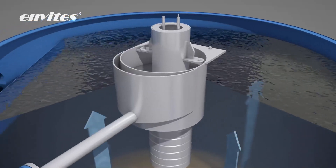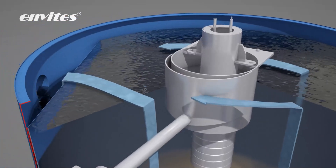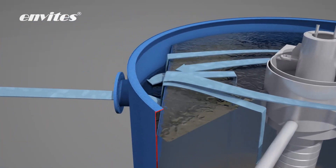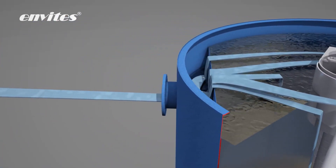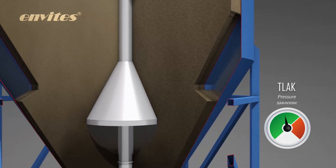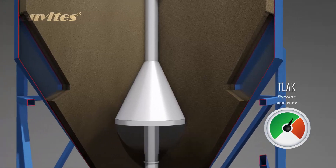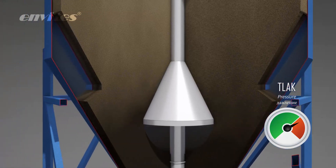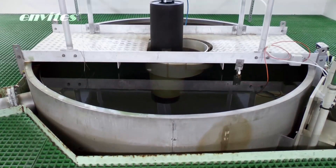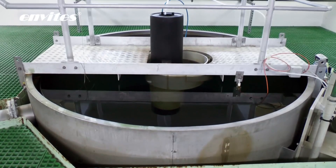The filtered water flows out through a collecting overflow channel. The sand filter is backwashed automatically based on the measured pressure loss of the sand filter.